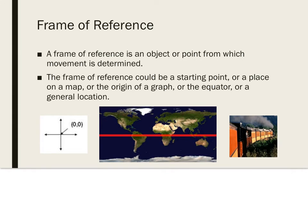A frame of reference is an object or point from which movement is determined. The frame of reference could be a starting point or a place on a map, or maybe the origin of a graph, or maybe the equator. A general location could also be your frame of reference.